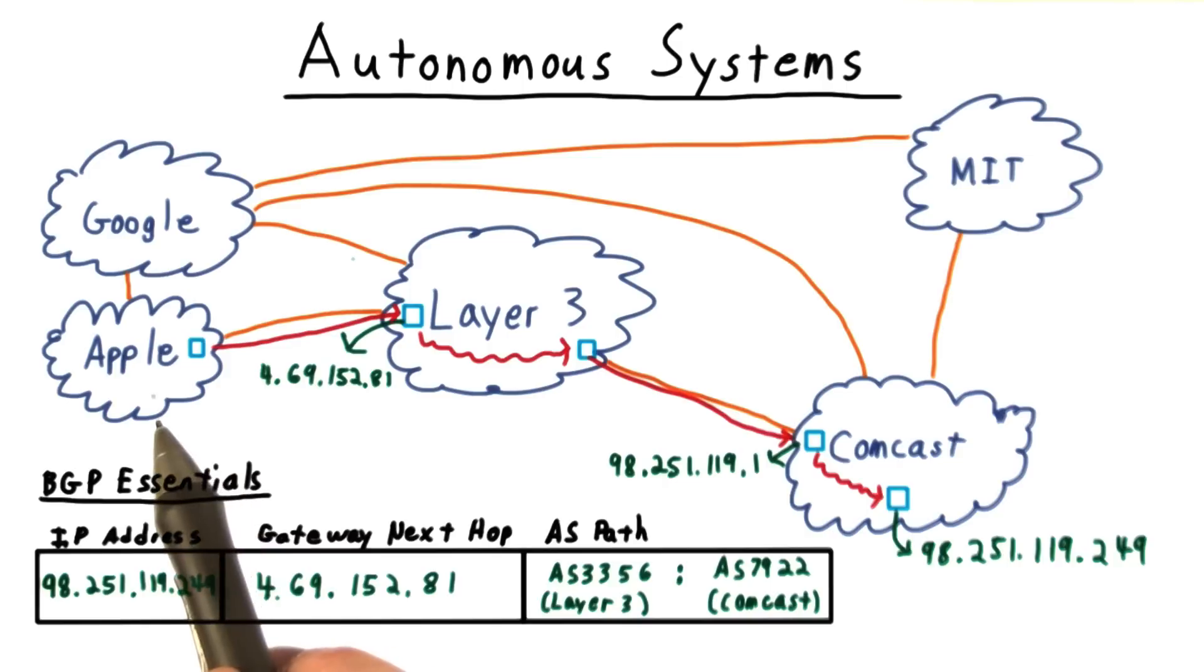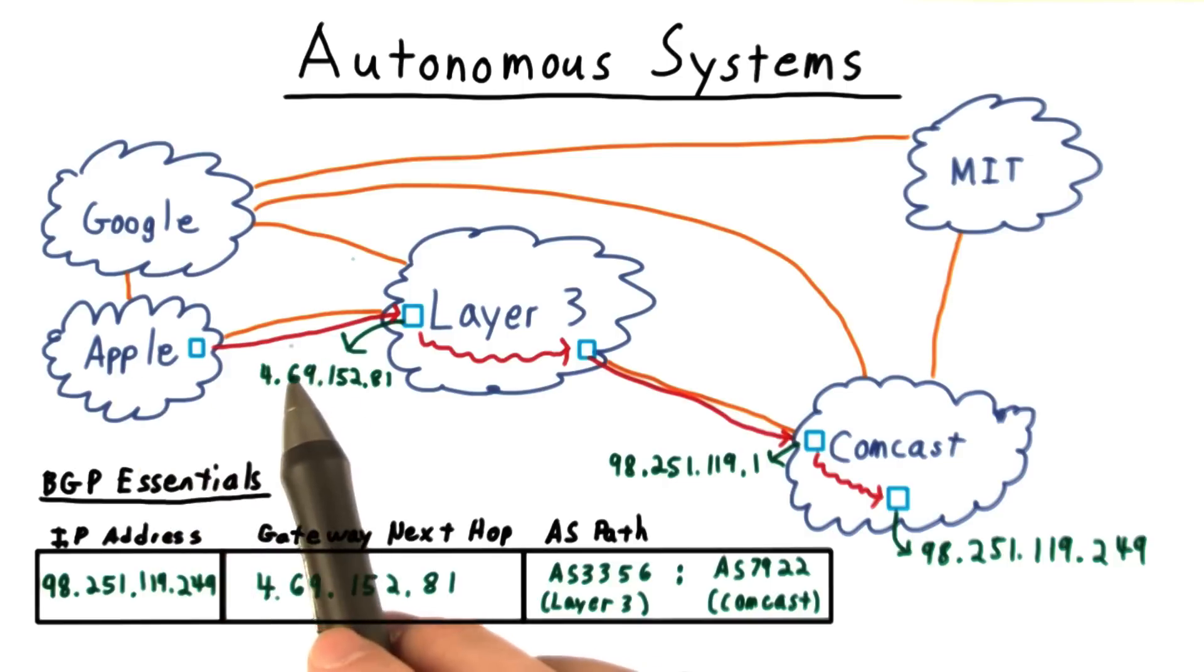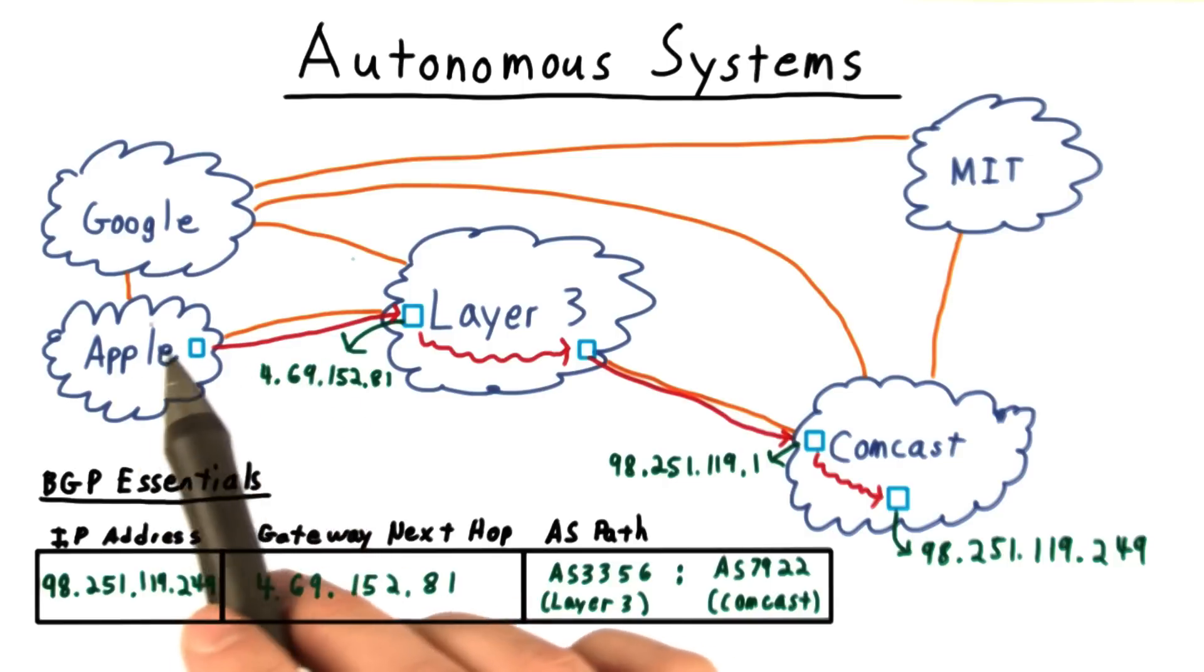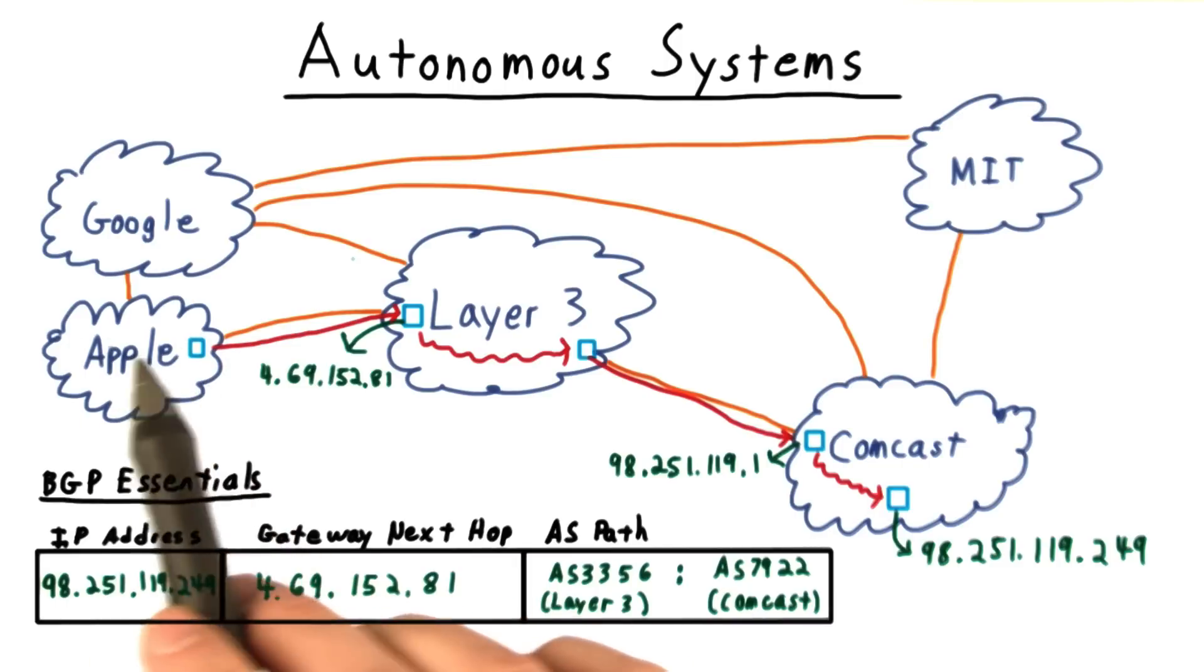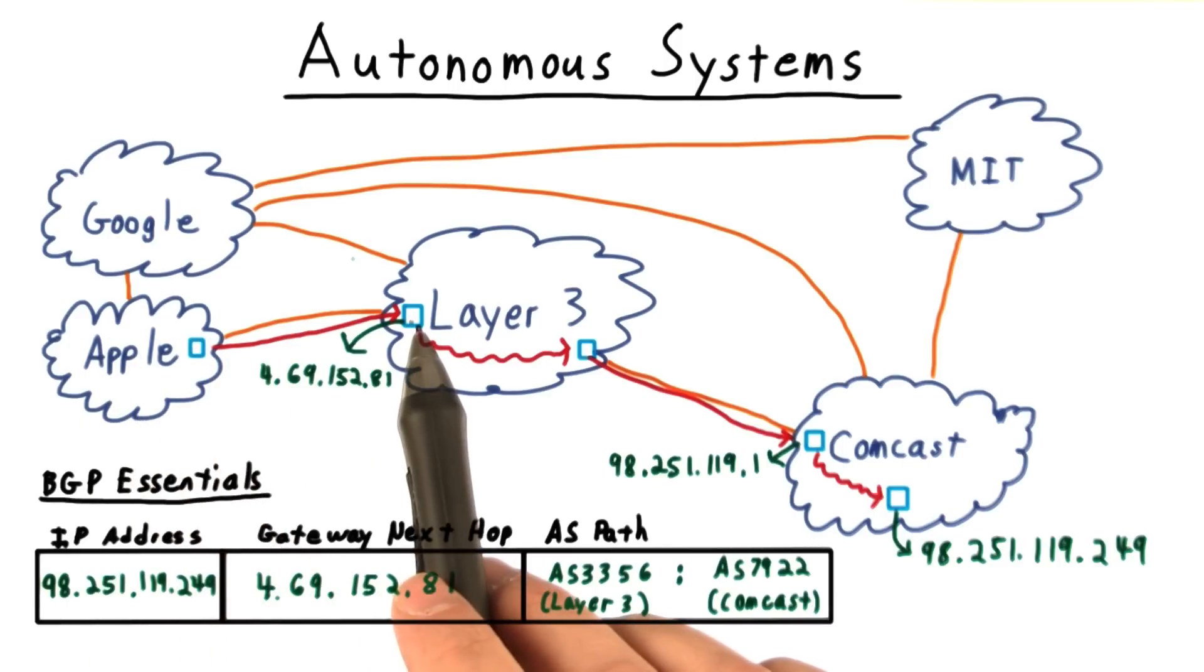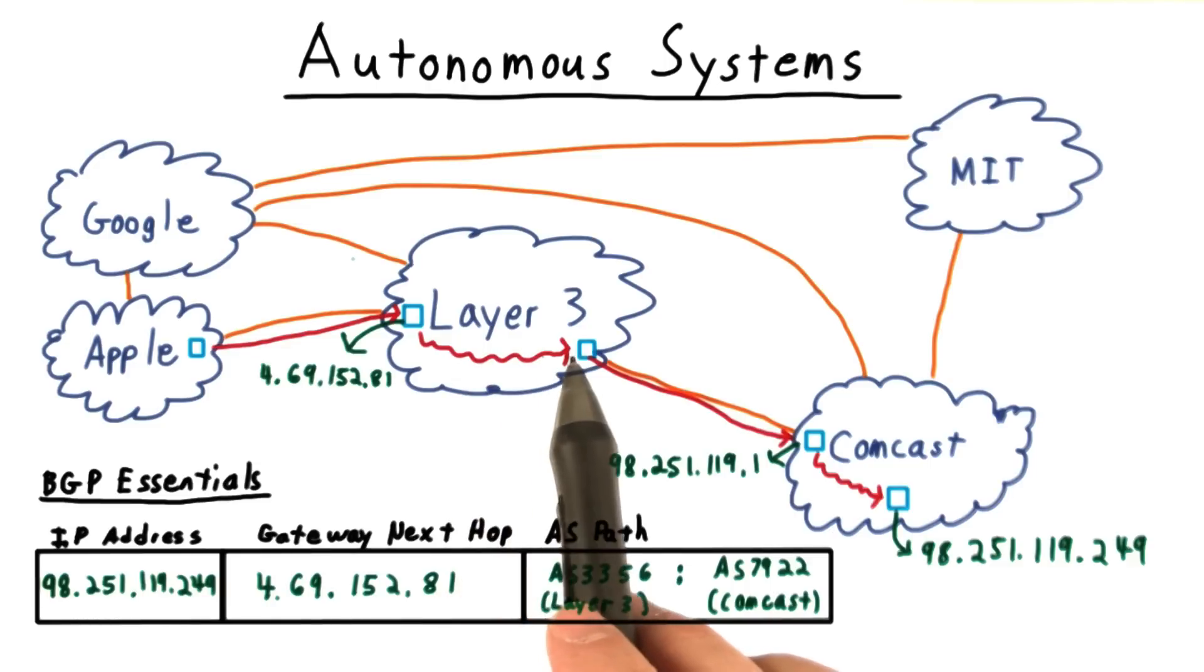After all this information has been incorporated into the routing tables, all the routers in the Apple network know how to send the data back to my machine. They have their own internal routing before sending it to Level 3, who does its own internal routing before sending it to Comcast, who then does its internal routing to get the message to my house.